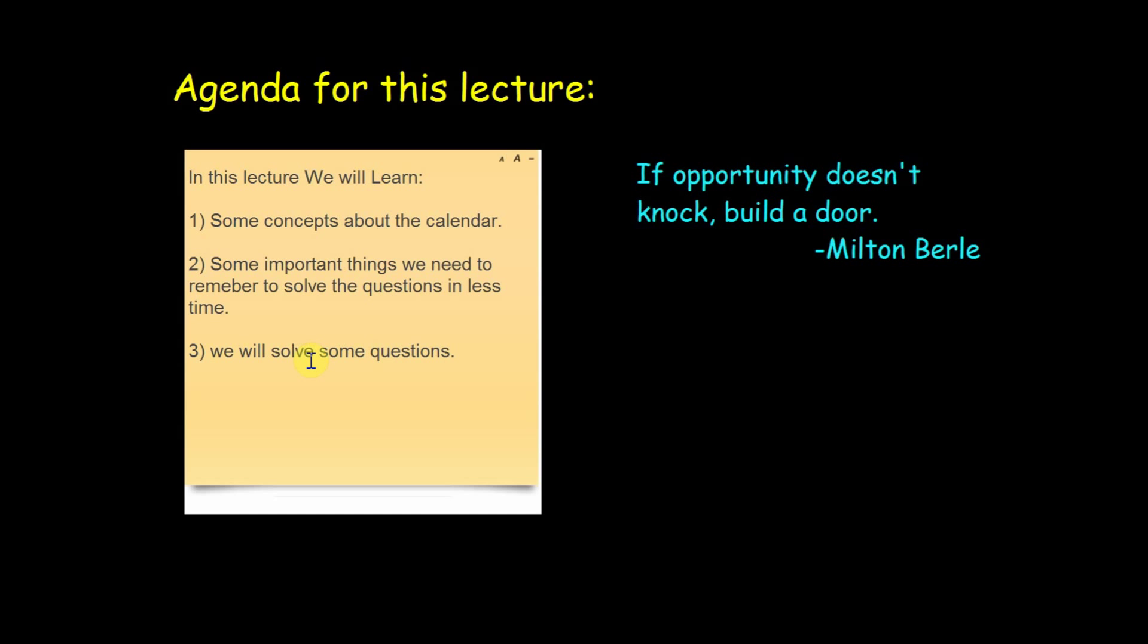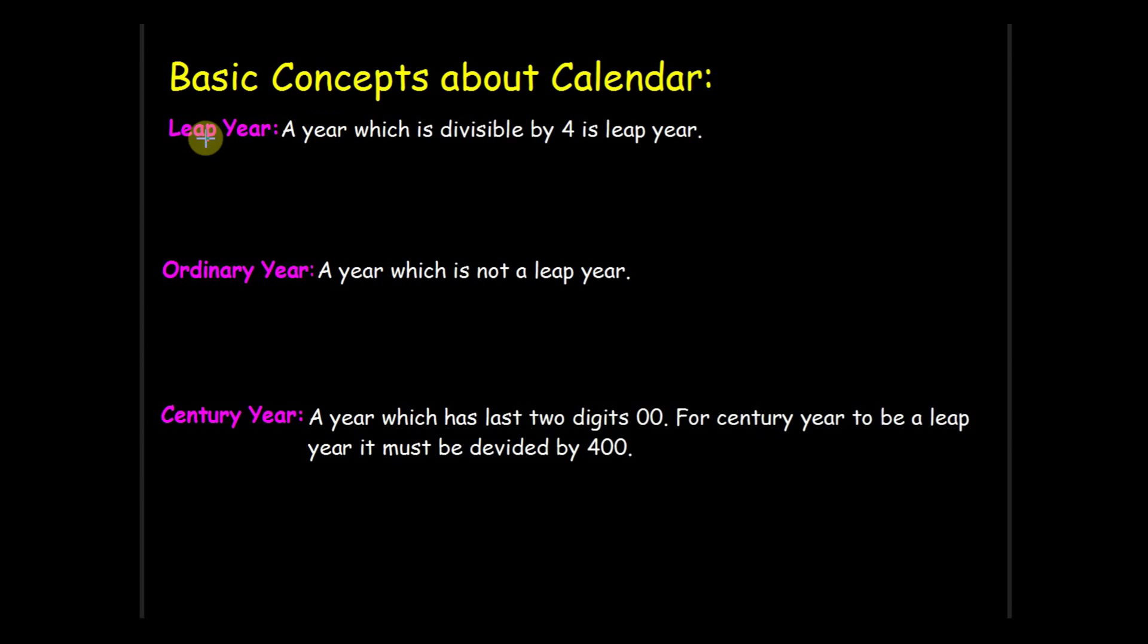And at last we'll solve some questions. Now we'll see some basic concepts about calendar. First is leap year concept. Leap year is a year which is divisible by four. For example, 2004 - last two digits of 2004 are divisible by four, so the whole number is also divisible by four. And another one is 2012, it is also divisible by four so it's a leap year.